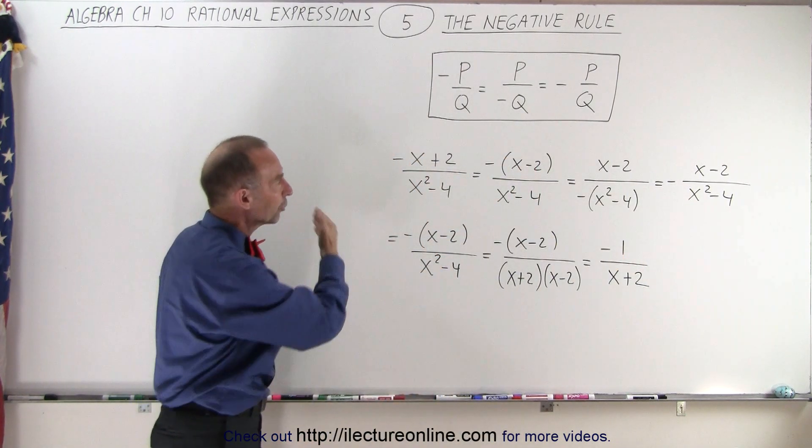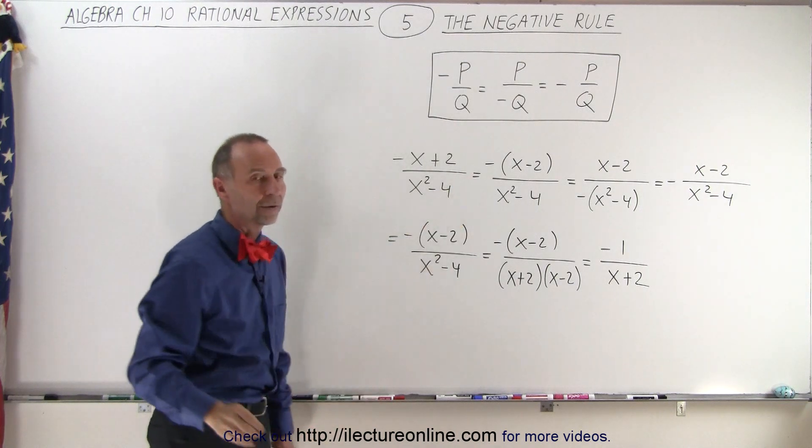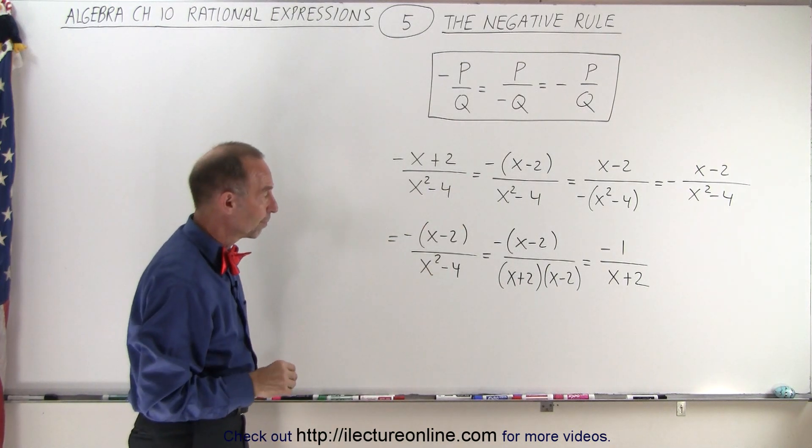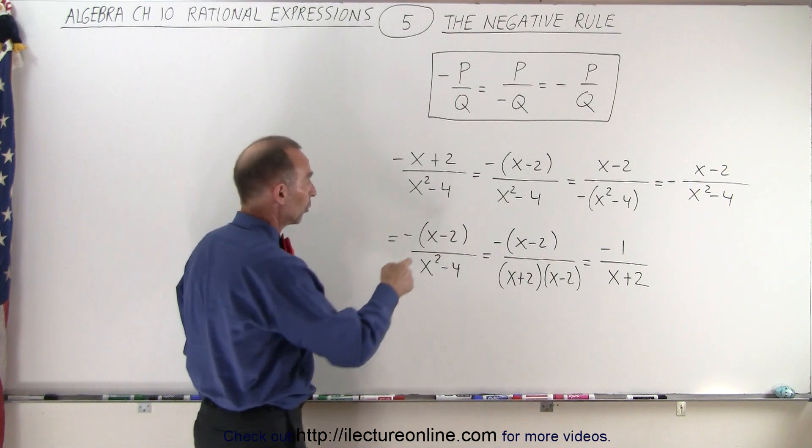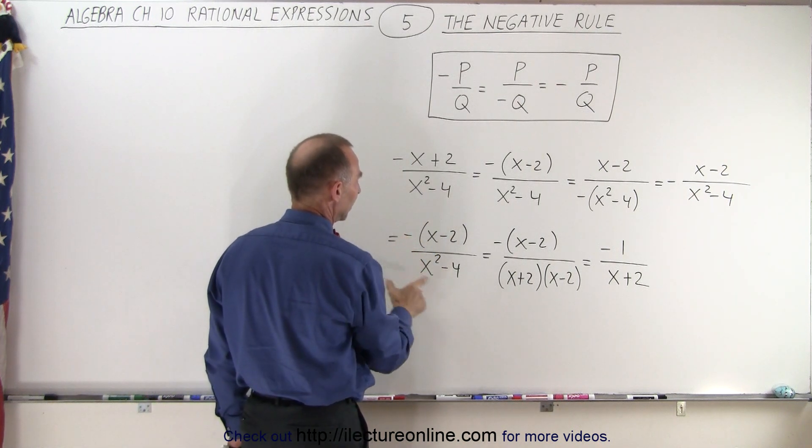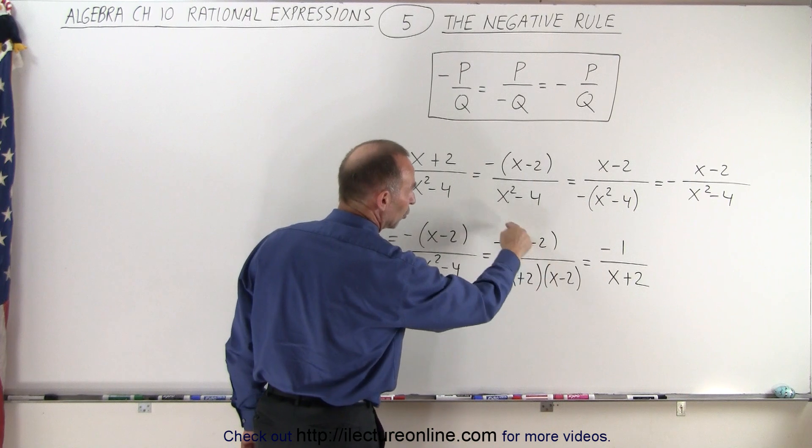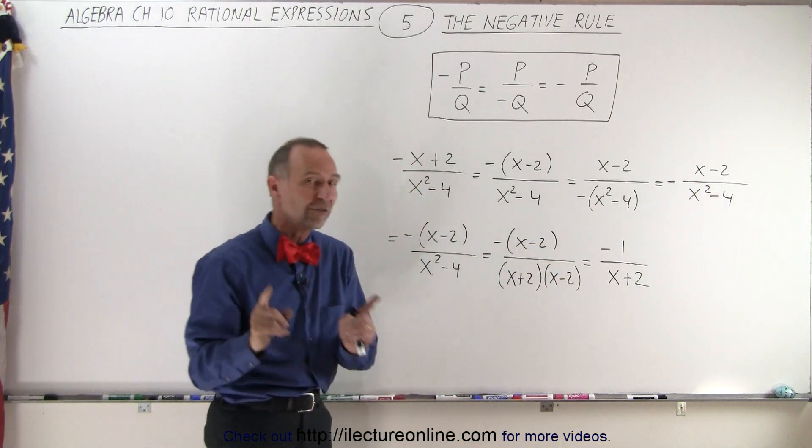It's exactly the same thing. All those expressions in the numerator are identical to one another. Now, what we can do then is, of course, factor out the negative sign, then factor the denominator, and then realize that both the numerator and the denominator have a common factor.